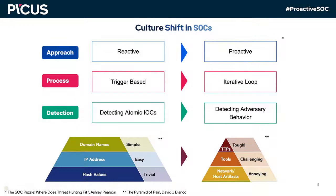There is a very apparent cultural shift in the way SOCs operate, where SOCs began to take a more proactive approach. Starting with the first antivirus software, we traditionally detected atomic IOCs such as hash values, IP addresses, and domain names. However, we must start to detect adversary behavior — tactics, techniques, and procedures (TTPs) — and tools used by adversaries. At a minimum, we have to detect their artifacts in the network and on hosts.